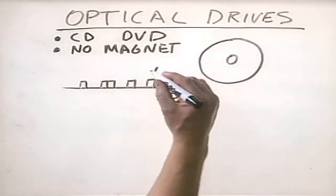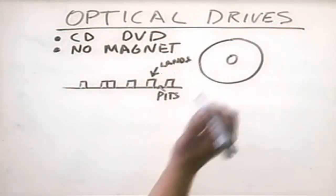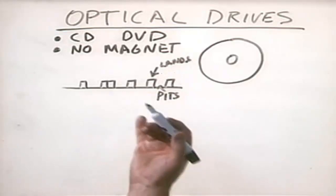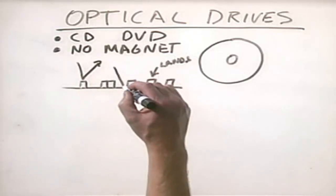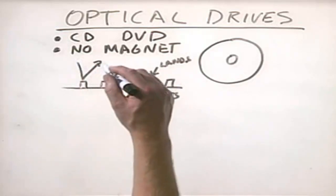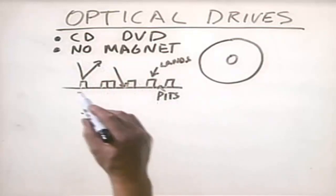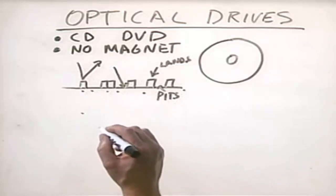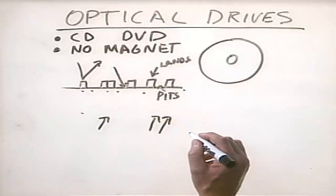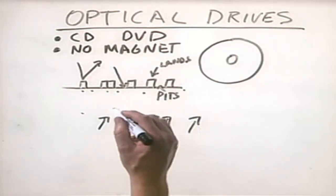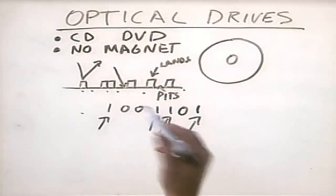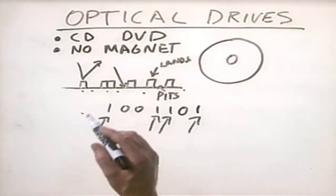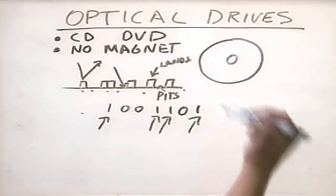We would have pits and we would have lands — these are physical etchings in the bottom surface of the CD or DVD. This creates a system where certain areas of the disk reflect light and other areas do not. Imagine bouncing a laser beam off the bottom of this spinning disk — the laser would hit areas that reflect light, then areas that don't, alternating along the surface. You can construct binary data from these light impulses: if we see an impulse it's a one, if we don't it's a zero — encoding binary data by reading the optical surface.